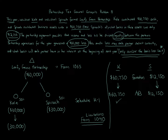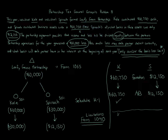What about Spinach? The question is: does Spinach have $30,000 of basis? The answer is no. So how much loss can Spinach take? The answer is $12,150 — limited to the basis. The remaining portion is $17,850 of loss that carries over to next year for Spinach. Kale has nothing that carries over because all of Kale's allocated loss was usable.